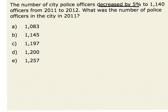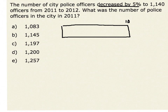Since this is a percent decrease, one way we could solve this problem is to set up a diagram. If that represents our whole, our 100%, that would be given by our 2011 value, our original value, which is unknown. We now know that the population decreased 5% to give us our 2012 value. So if we took away 5%, we would get our value of police officers as 1,140.